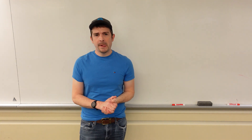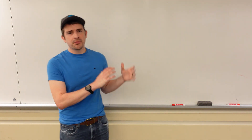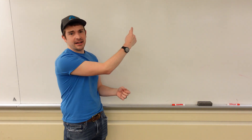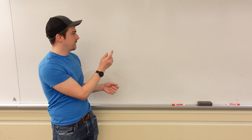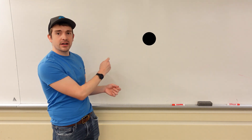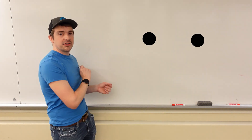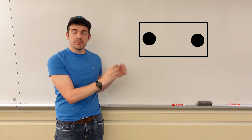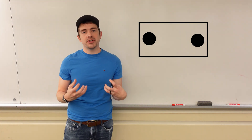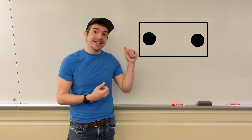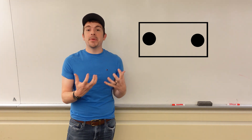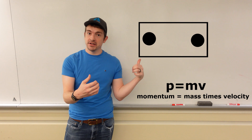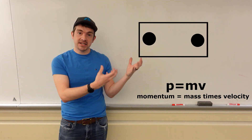To start, we need to define a system. A system is anything that I define — so if I have an object here and an object here and I just draw a box around those, then I'm defining that as my system. When I talk about the momentum of a system, I'm talking about what's happening inside that system.